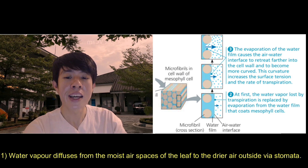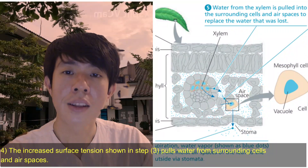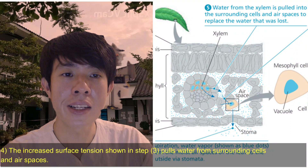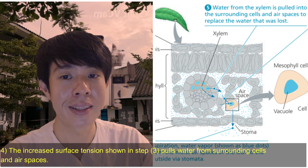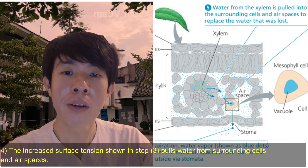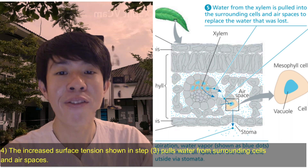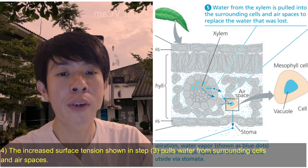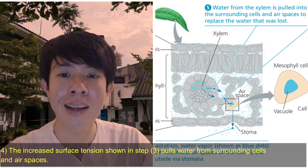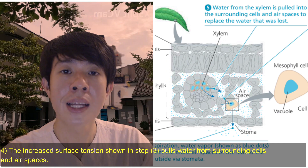The evaporation of the water film causes the air-water interface to retreat further into the cell wall and to become more curved. This curvature increases the surface tension and the rate of transpiration. The increased surface tension pulls water from the surrounding cells and air spaces through the apoplast, symplast, and vacuolar pathways. Water from the xylem is then pulled into the surrounding cells and air spaces to replace the water that was lost.